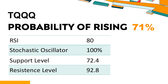The current stochastic oscillator of TQQQ is 100%. When the stochastic oscillator rises above the 80 level, it is usually considered overbought, indicating the stock may be due for a price pullback. An overbought condition can be a sign that buying pressure has exhausted. The probability of TQQQ share price rising is 71%. When the probability of rising is higher than 50%, the stock has a higher chance of rising. Combining multiple indicators, TQQQ has four bullish signals and three bearish signals.